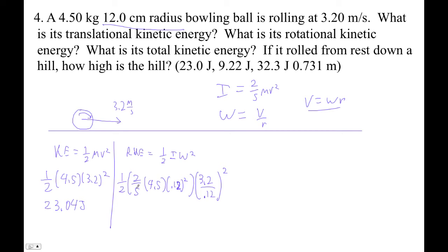Okay, so let's see. So I'm going to go 0.5 times 2 divided by 5 times 4.5 times 0.12 squared times 3.2 squared divided by 0.12 squared. I'm getting 9.216 joules. And that's my rotational kinetic energy.